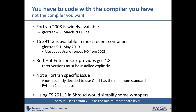The problem is you have to code with the compiler you have, not the compiler you want. Fortran 2003 is pretty widely available. GFortran 4.3 started adding some bind(C) features over 10 years ago, and PGI still lists itself as a Fortran 2003 compiler. TS 29113 is available in the most recent compilers and went into GFortran 9.1 about a year ago. But in the same changelog, they were also adding asynchronous I/O from the 2003 standard — pointing out the difficulty that the path from standard to compiler is sometimes very long.